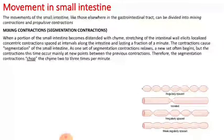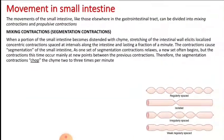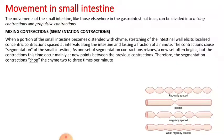Now we will move to the small intestine. For the small intestine, there are two types of movements: one is called mixing contraction, and the other is propulsive contraction. For mixing contraction in the small intestine, when chyme enters the small intestine, it causes distension and stretching in the wall of the small intestine. This stretching is localized.